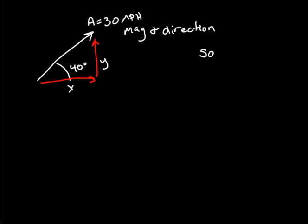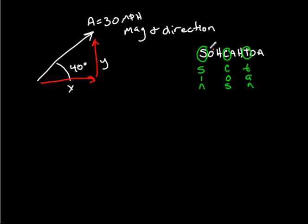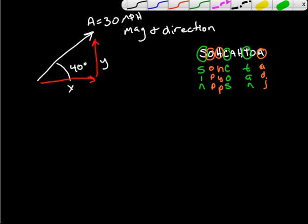We're going to use that using SOH-CAH-TOA. The S stands for sine, the C stands for cosine, and the T stands for tangent. The O and H and A in each of these: O stands for opposite, H stands for hypotenuse, and A stands for adjacent.